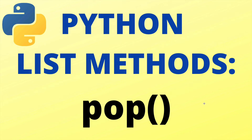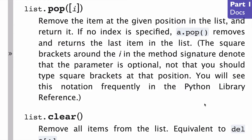In this video, the pop list method in Python. Let's start with a look at the docs. Pop takes one optional argument, which is the index of the item that you would like to pop or remove from the list. The brackets on the left and right side basically indicate that this is an optional argument.